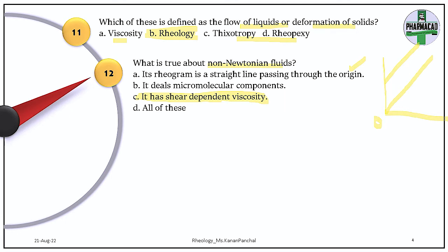For a plastic system, the rheogram starts from a certain yield value. Pseudo-plastic and dilatant systems are also non-Newtonian. The option 'deals with micromolecular components' is true for a Newtonian system — that is why NaCl injection follows Newtonian flow. The correct answer for question 12 is C.